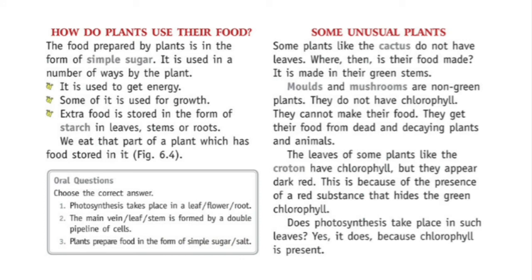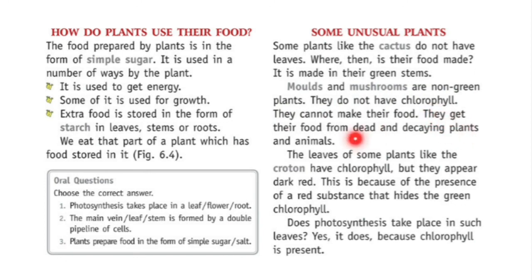The next topic is some unusual plants. Some plants like cactus do not have leaves — in cactus, food is made in their green stems. Molds and mushrooms are non-green plants; they do not have any chlorophyll and cannot make their own food. They get their food from dead and decaying plants and animals.